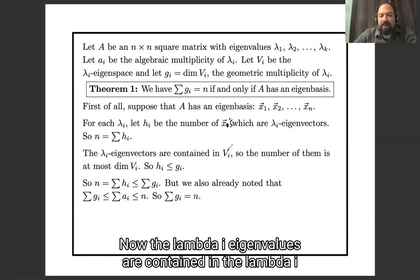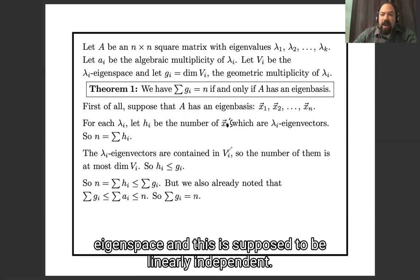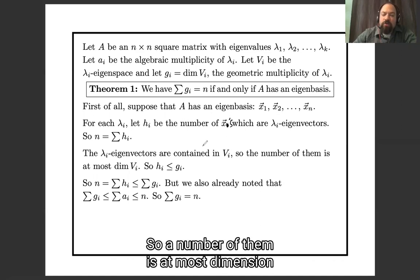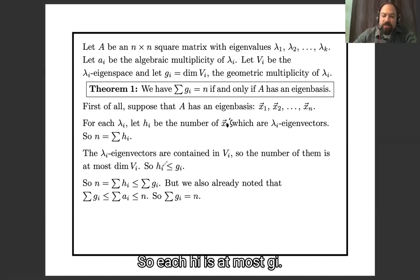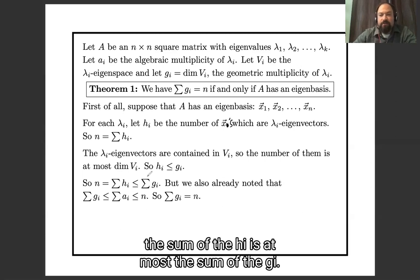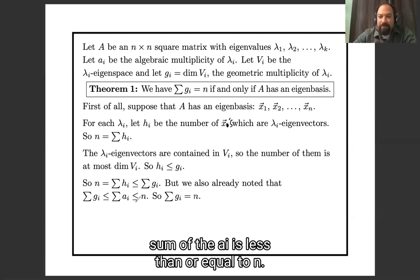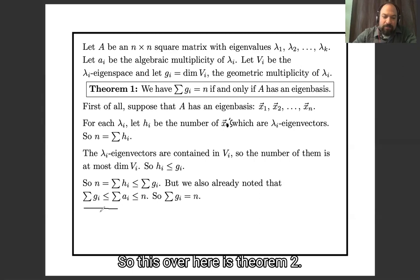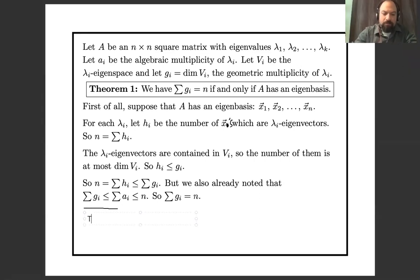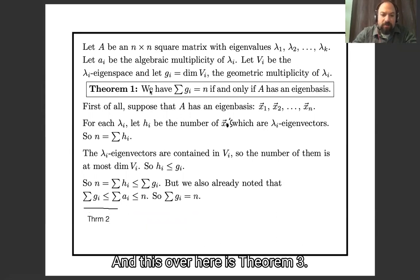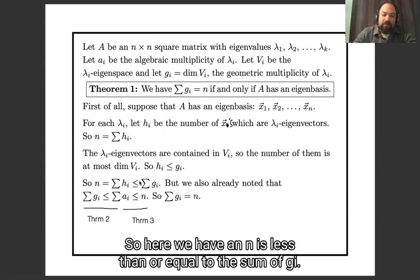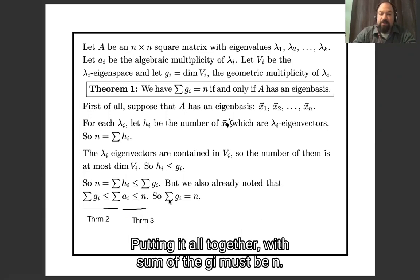The lambda_i eigenvectors among the basis are contained in the lambda_i eigenspace and are linearly independent as a subset of a basis, so the count h_i is at most the dimension g_i of the eigenspace. Therefore n, which equals the sum of the h_i's, is at most the sum of the g_i's. But we already know that the sum of the g_i's is less than or equal to the sum of the a_i's, which is less than or equal to n — by Theorem 2 and Theorem 3 respectively. So we have n is at most the sum of the g_i's, and the sum of the g_i's is at most n, so the sum of the g_i's must equal n.